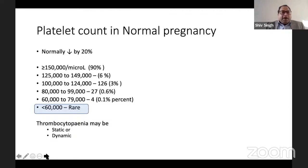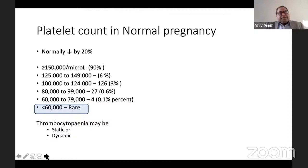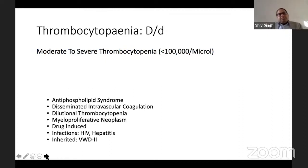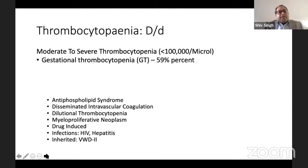You also need to be aware of whether the thrombocytopenia is static or dynamic — look at platelet counts over time to see if there has been a dynamic drop or if this is a one-off reading. Moderate to severe thrombocytopenia is defined as counts less than 100,000. The commonest differential in this case is gestational thrombocytopenia, present in 59% of patients.